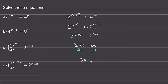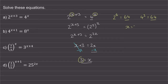We can check that this works by substituting 3 back into our original equation. So we have 2 to the power of 3 plus 3, which is 6, and this is 64. And 4 to the power of 3 is 4 cubed, which is also 64. So we know that x is equal to 3.